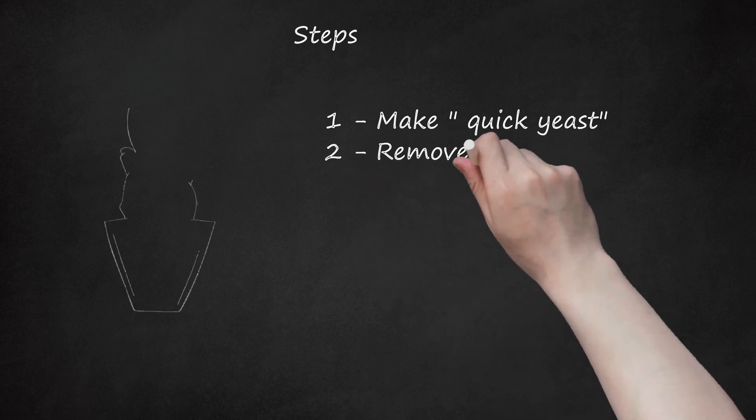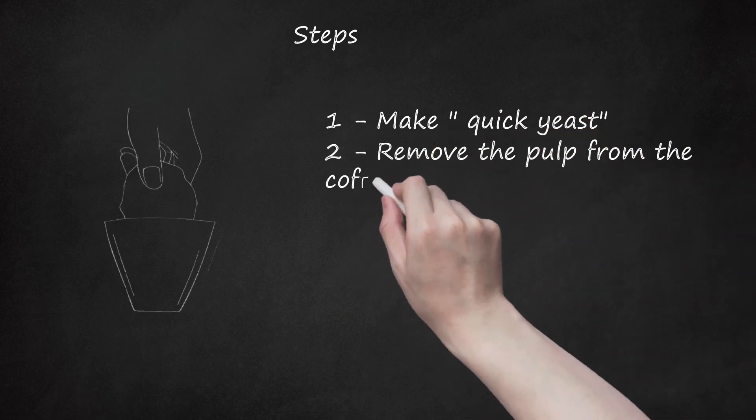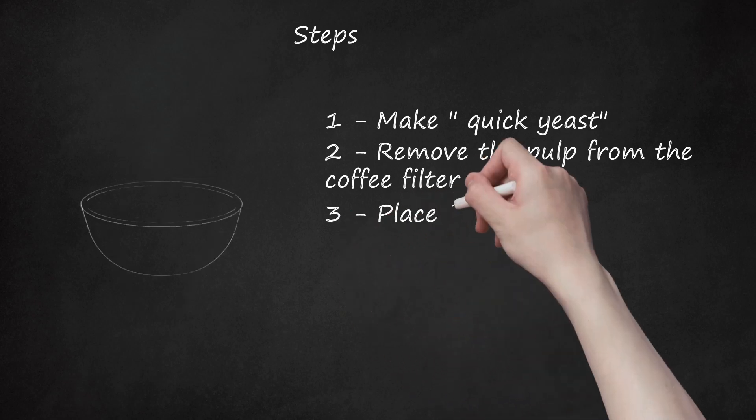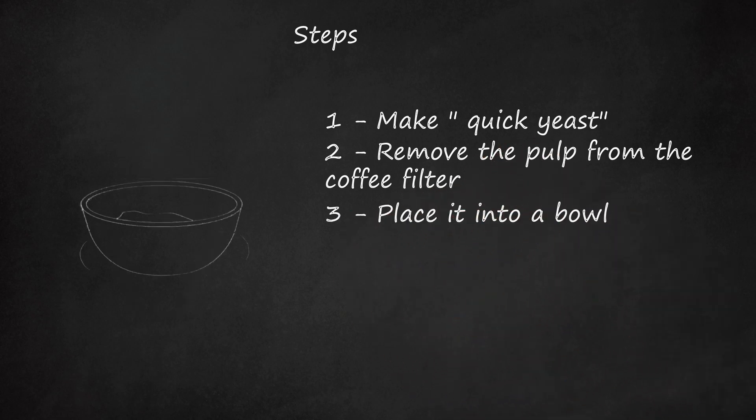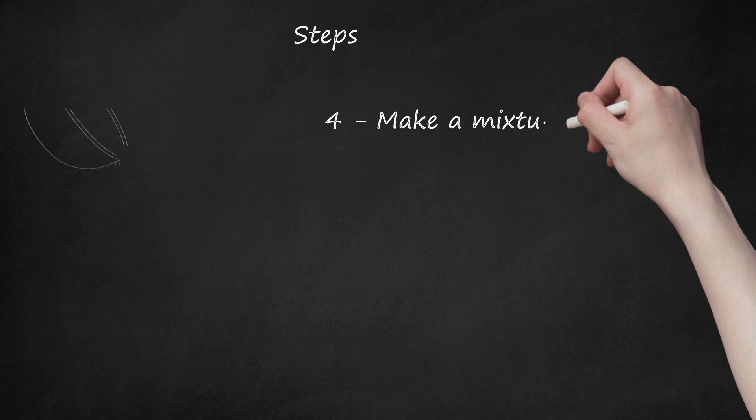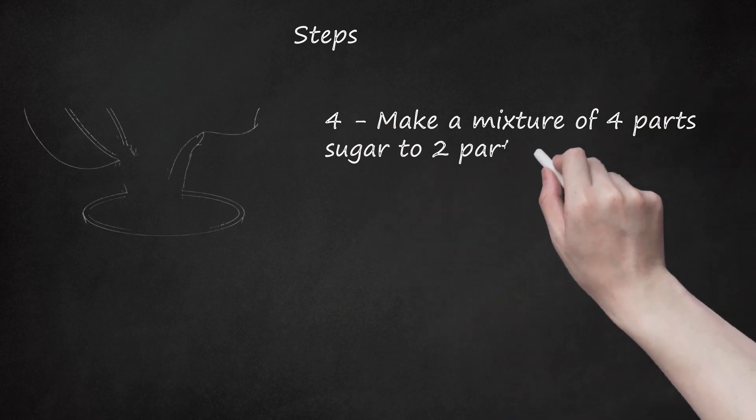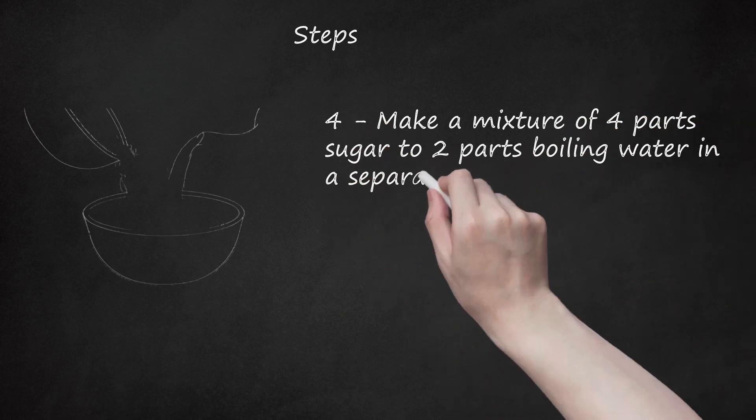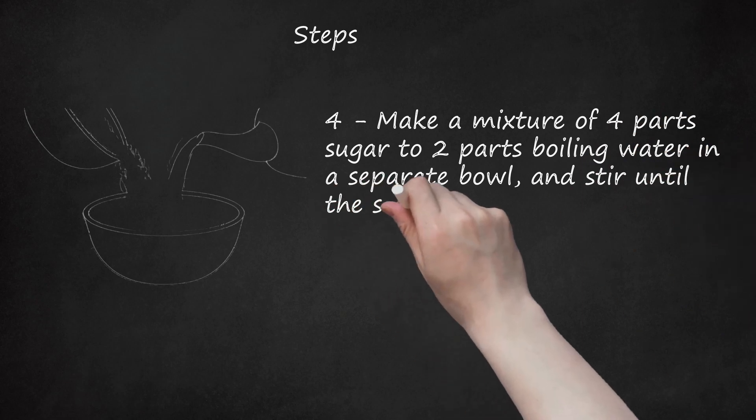Step 2: Remove the pulp from the coffee filter. Step 3: Place it into a bowl. Step 4: Make a mixture of 4 parts sugar to 2 parts boiling water in a separate bowl and stir until the sugar has dissolved.